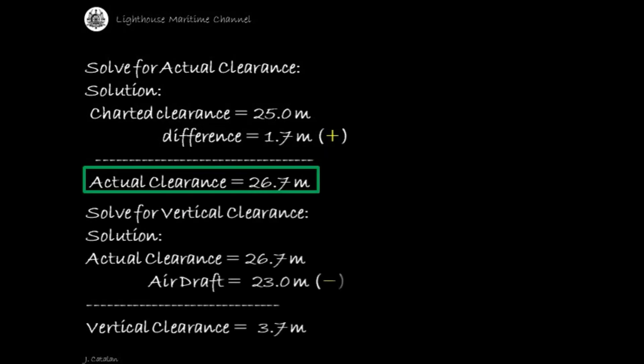Solve for vertical clearance. Solution: actual clearance (26.7 meters) subtracted by the air draft (23.0 meters). The result is the vertical clearance, which is equal to 3.7 meters.